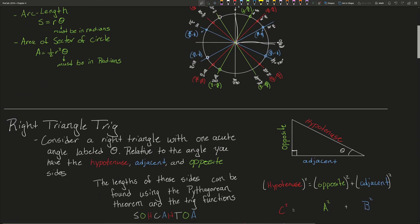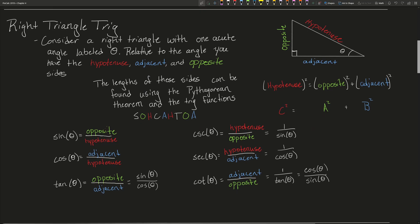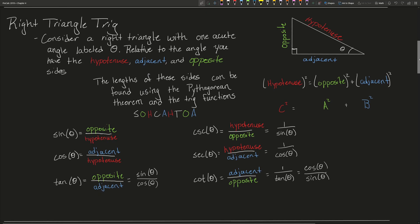In right triangle trig we have a right triangle with one of the non-right angles labeled theta. Relative to this angle we have the hypotenuse, the adjacent, and the opposite sides. The opposite side is the side opposite the angle, the hypotenuse is the largest side, and the adjacent is the side attached to theta but not the hypotenuse.